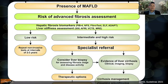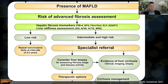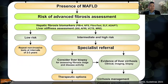Once you have a MAFLD diagnosis, assess the degree of fibrosis — it is a very important prognostic indicator. You can use the FIB-4 score, NAFLD Fibrosis Score, FibroScan, or FibroTest, in addition to albumin, prothrombin time, bilirubin, AST, and platelet count. If fibrosis scores show no or minimal fibrosis, the patient is low risk but should still be followed up every six months to one year with biochemical tests, and fibrosis reassessed every two to three years.